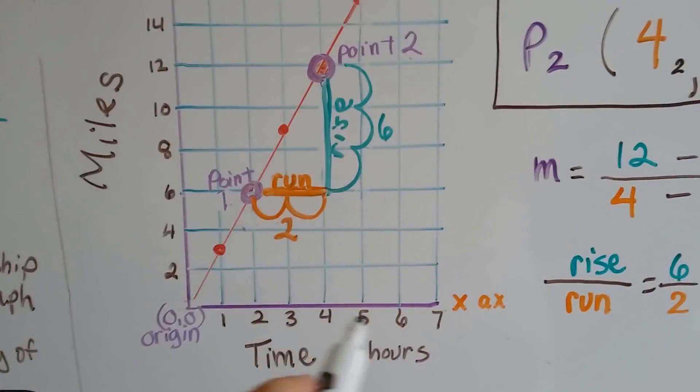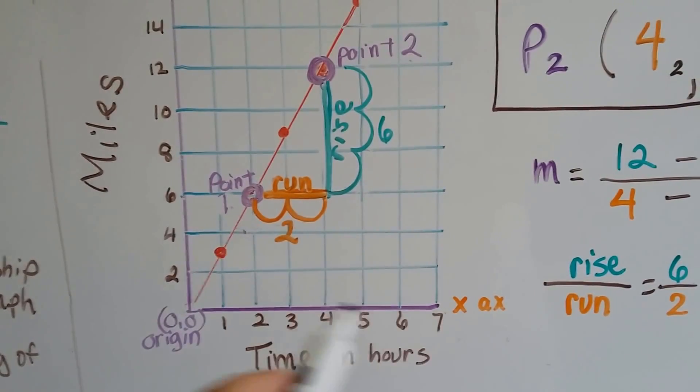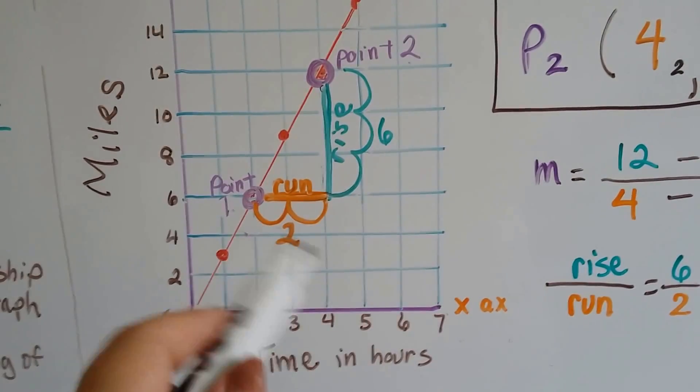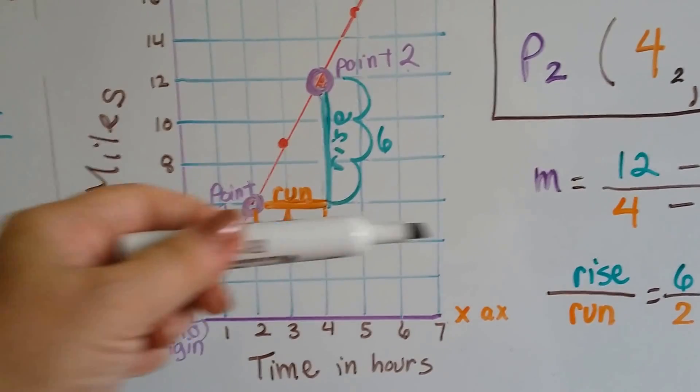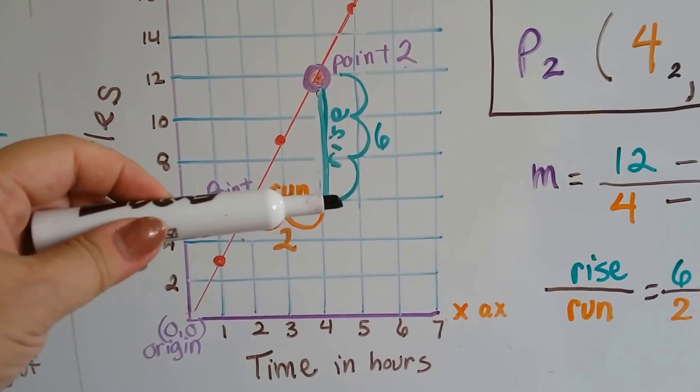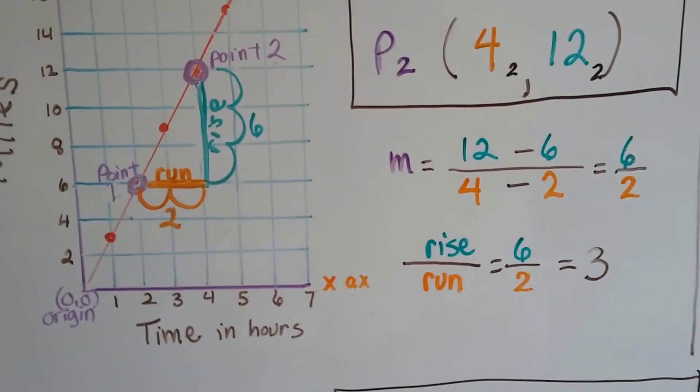Our run, this goes by single digits. So 2 boxes would be a run of 2. The run is the horizontal change. We put the change of the 6 over the 2, and that's our rise over the run.